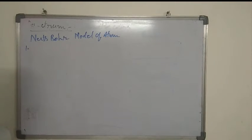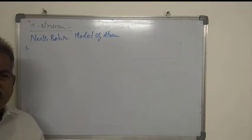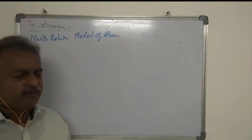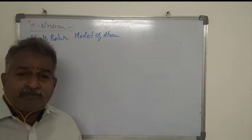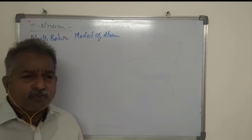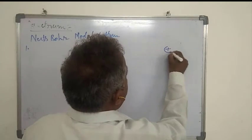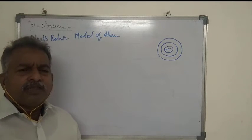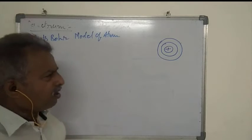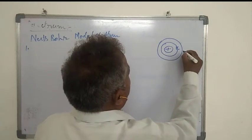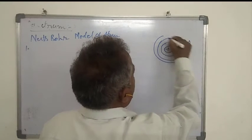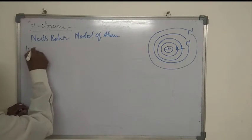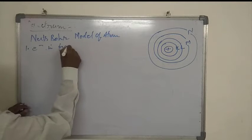Bohr proposed that electrons revolve around the nucleus in certain definite circular orbits. In Rutherford's model it was not mentioned whether there is one orbit or more than one orbit for electrons. Whereas Bohr stated that a fixed number of orbits are available depending upon the number of electrons present in the atom. The first orbit is denoted as K, second as L, third as M, fourth as N. So electrons revolve in fixed number of orbits.